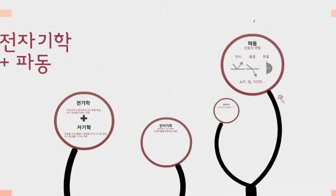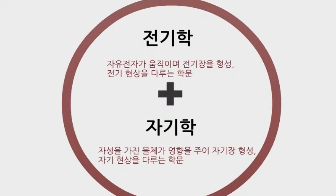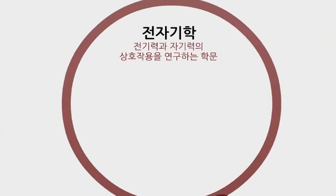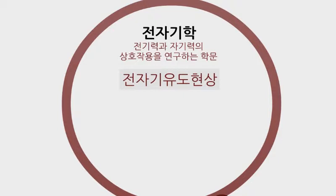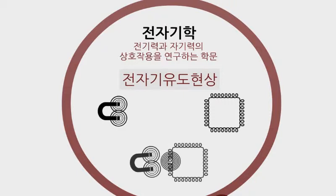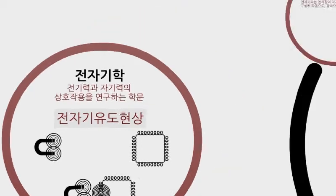다음은 전자기학과 파동에 대해 설명드리겠습니다. 전자기학은 전기학과 자기학이 합쳐진 학문입니다. 고대에는 다른 학문이라고 느껴졌던 분야가 패러데이에 의해서 전자기학이라고 통합된 학문으로 이루게 됩니다. 서로 영향을 준다는 걸 알아냈기 때문이죠. 바로 전자기 유도 현상입니다. 자기장을 가진 자석이 자유전자가 많은 전선 주변으로 가면 전자들이 반응을 일으켜서 전기장을 만들어내는 거죠.